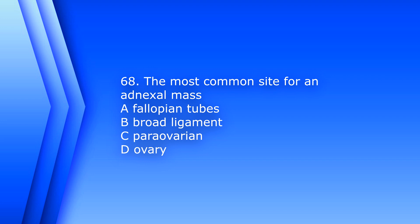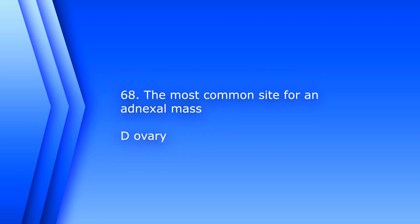Question 68. The most common site for an adnexal mass is: A. Fallopian tubes, B. Broad ligament, C. Para-ovarian, D. Ovary. The answer is D, Ovary.